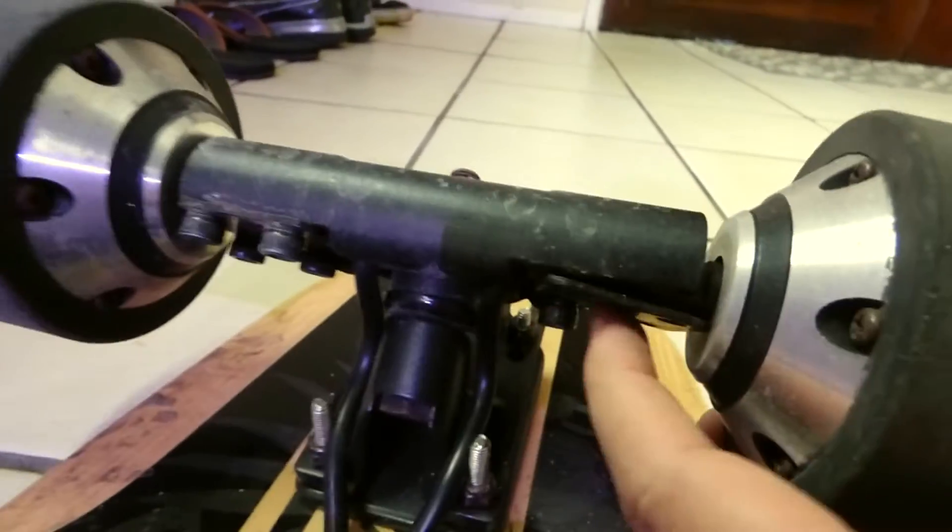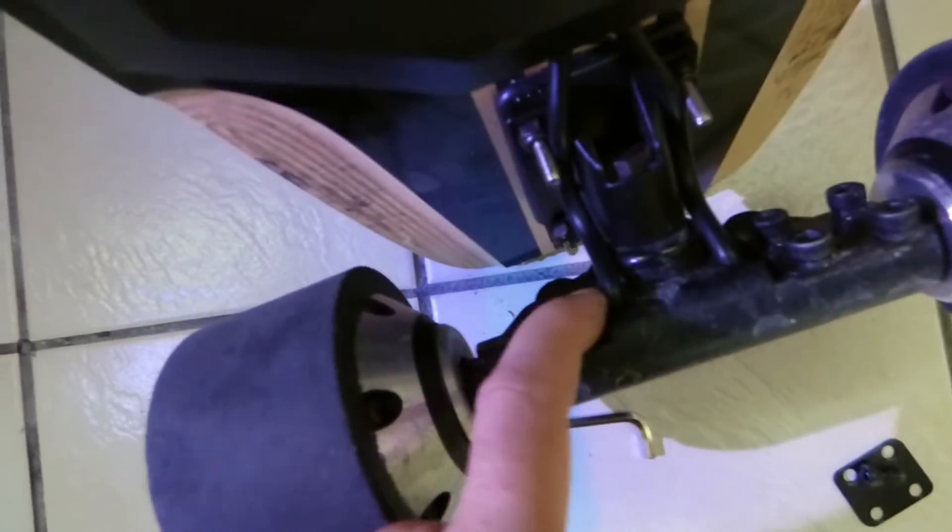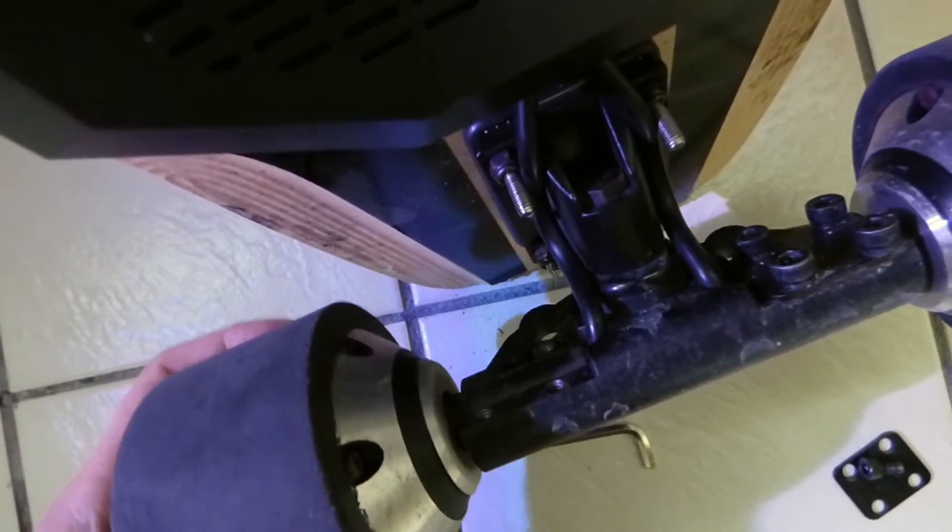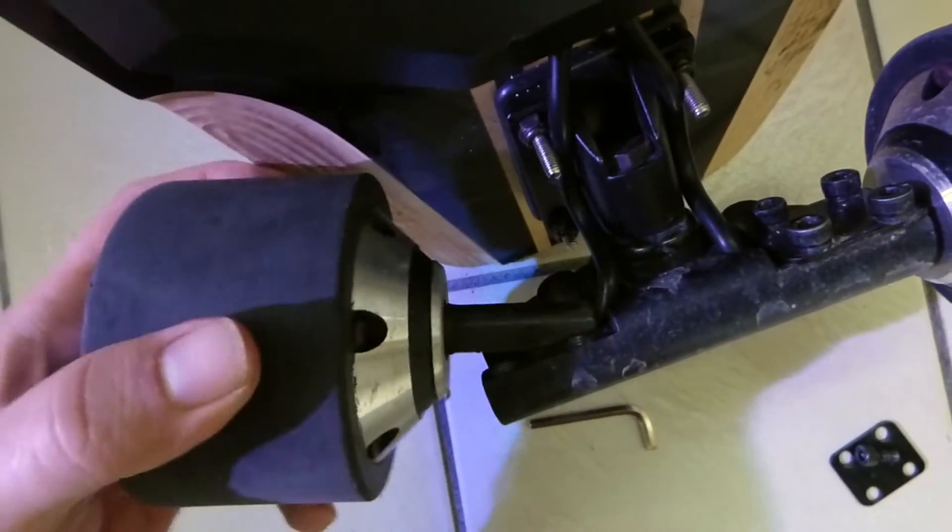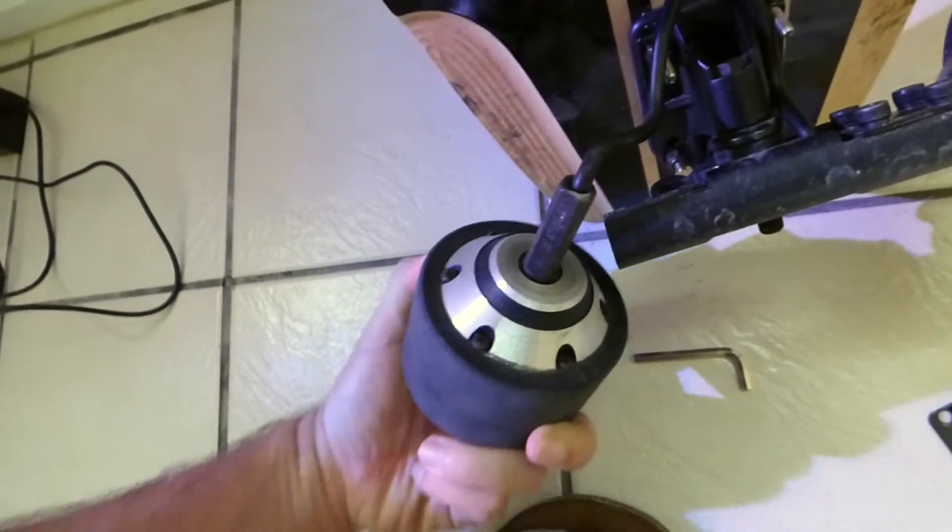So it looks like it just clamps it in there. There's just a plate that pushes down on here and that's what locks it in. Let's see if I can get this out. Alright so now it's just loose on the wire.